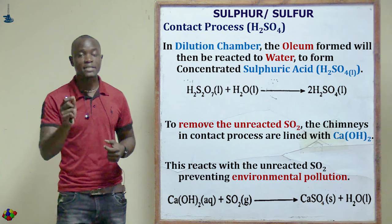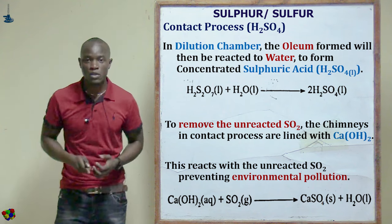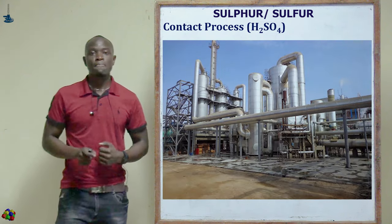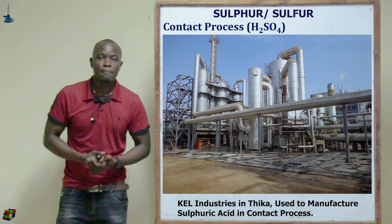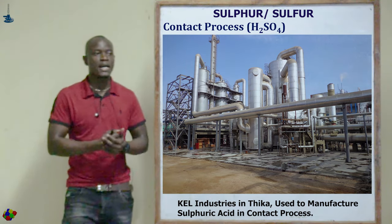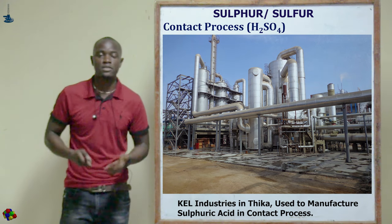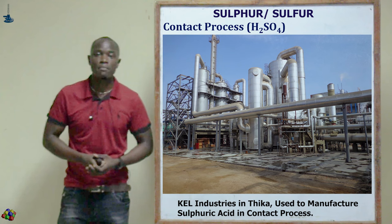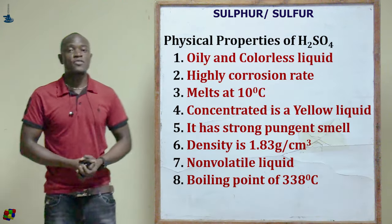In Kenya, sulfuric acid is manufactured in Thika by Chemical Limited Industries and also by Orbit Chemical Industries. Those are the areas where sulfuric acid is manufactured here in Kenya.